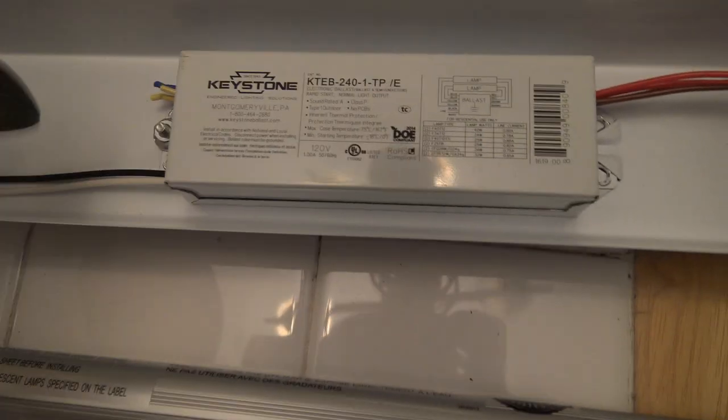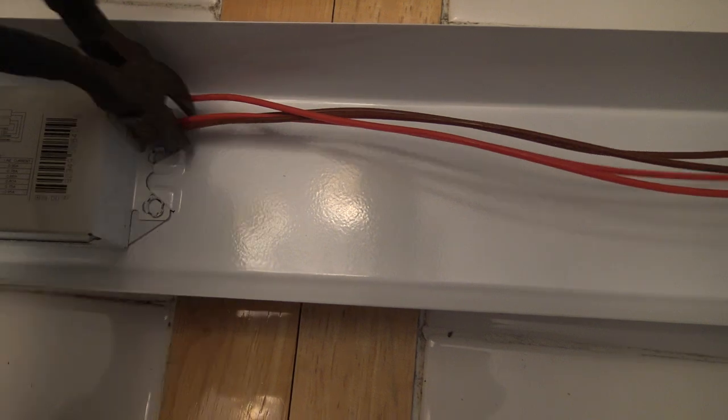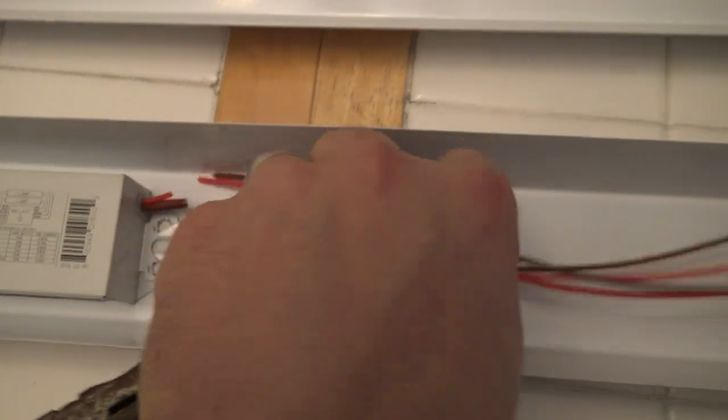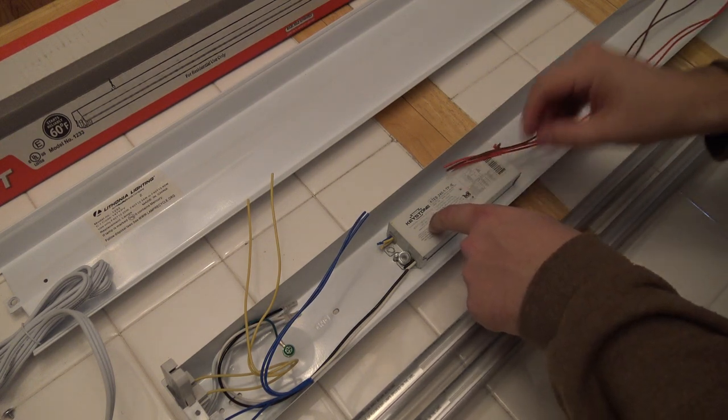So here's the ballast, we're not going to need it. And it doesn't really matter what wire goes where. At this point, all we need to do is cut all of these wires and get this ballast out.